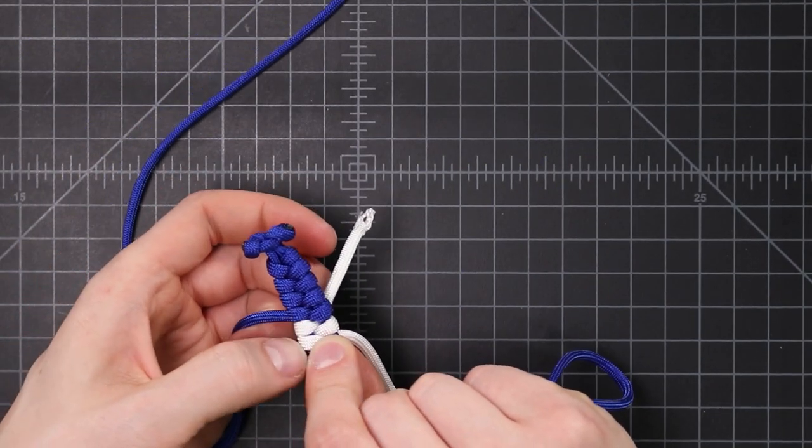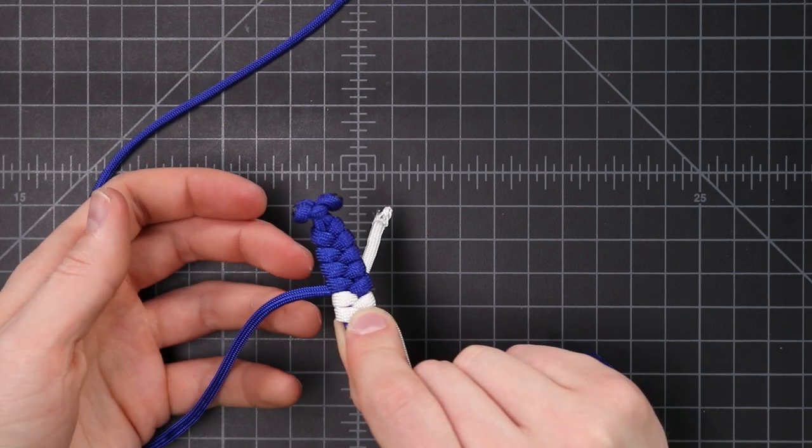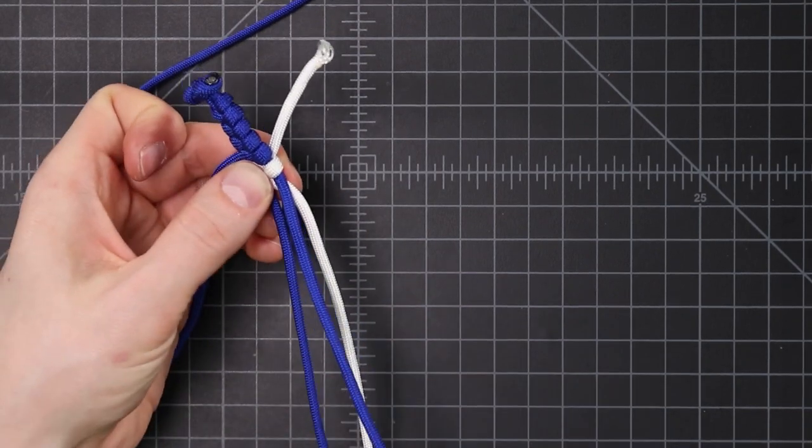So I'm gonna keep on going. I'm gonna add a white stripe, go back and forth between colors a couple times, and then at the end I'll show you how to finish it off.